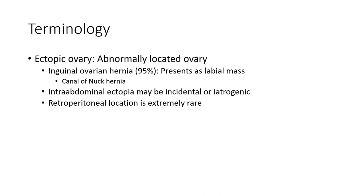Ectopic ovary is an abnormally located ovary. For example, in inguinal ovarian hernia, around 95% present as a labial mass via the canal of Nuck hernia. Intra-abdominal ectopia may be incidental or iatrogenic. Retroperitoneal location is extremely rare.